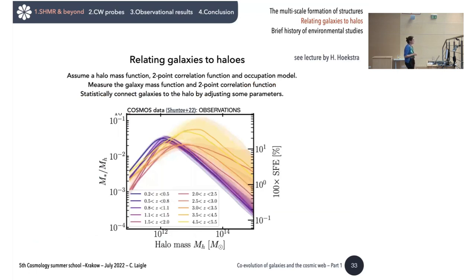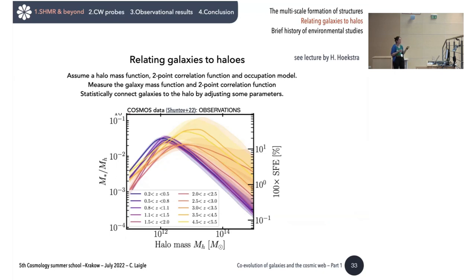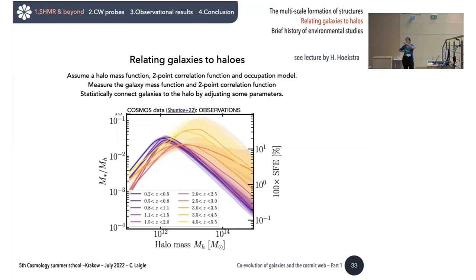Let's first relate galaxies to halos. The halo model is a statistical method to relate galaxies to their host halo in observations under some assumptions — like the halo mass function, two-point correlation function, and halo occupation models, describing how galaxies occupy dark matter halos. We measure the galaxy mass function and two-point correlation function in observations to statistically connect halos to galaxies, and can ask: on average given a halo mass, what would be the mass of the galaxy residing in that halo?